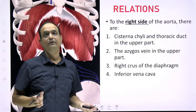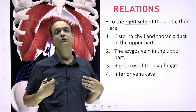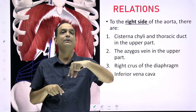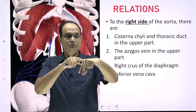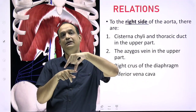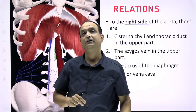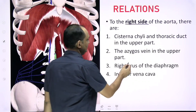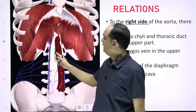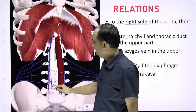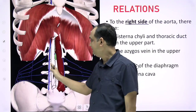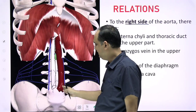Now, the right and left relations. At the hiatus — the gap between the diaphragm and vertebral column — two crura of the diaphragm are present on both sides. On the right side, you have the right crus of the diaphragm. Parallel to the abdominal aorta on the right side is the inferior vena cava. The inferior vena cava is a right-side structure, while the abdominal aorta is a midline structure in the upper part with a slight left shift in the lower part.